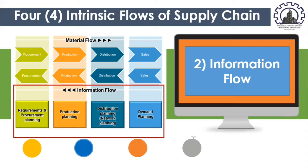Most information flows are unique to the specific supply chain. For example, information about women's fashion clothing has no value to a motorbike supply chain. Therefore, any supply chain will have its own sets of information flows that are vital to its existence, which are often jealously protected. Examples of information flow include demand planning, distribution planning, network planning, production planning, and requirements and procurement planning.